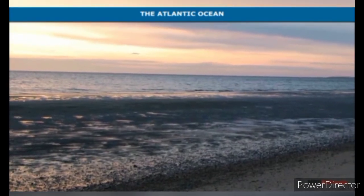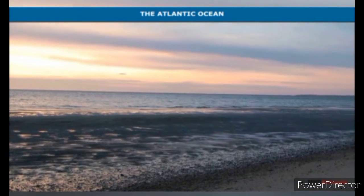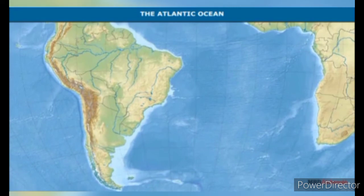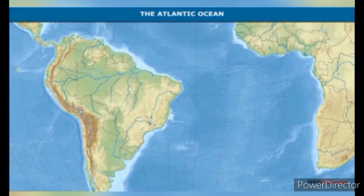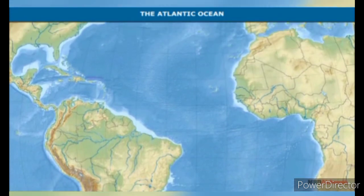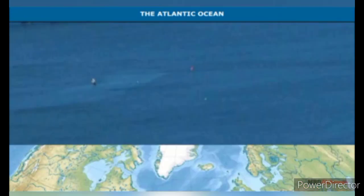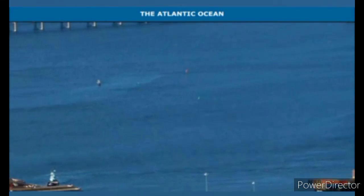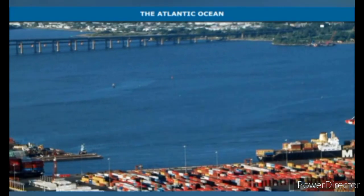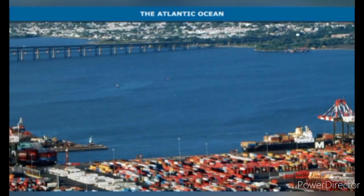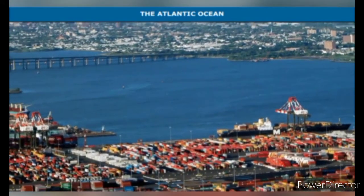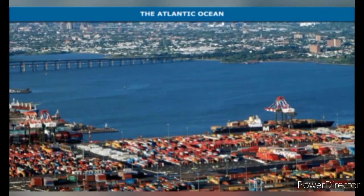The Atlantic Ocean is the second largest ocean in the world. It is S-shaped, flanked by North and South America on the western side and Europe and Africa on the eastern side. The coastline of the Atlantic Ocean is highly irregular. This unequal and irregular coastline provides ideal locations for natural harbours and ports. Commercially, it is the busiest ocean.